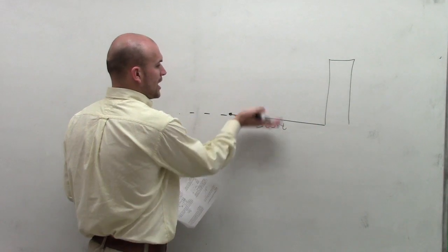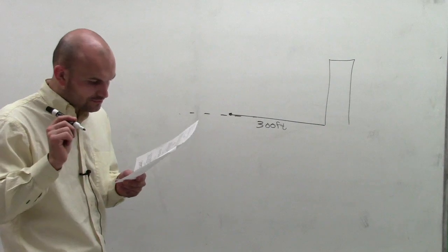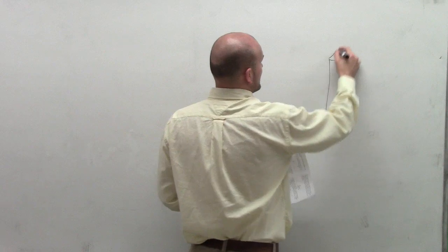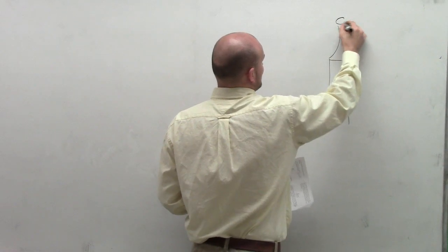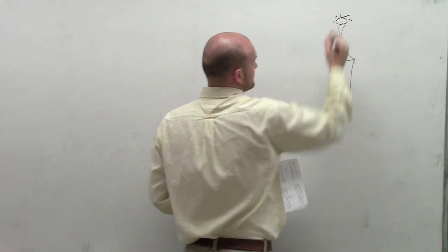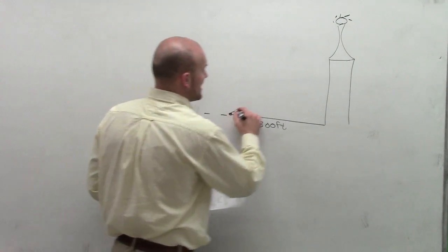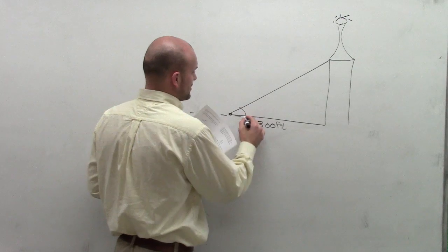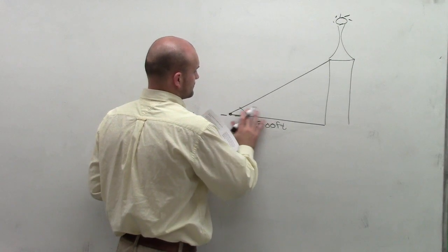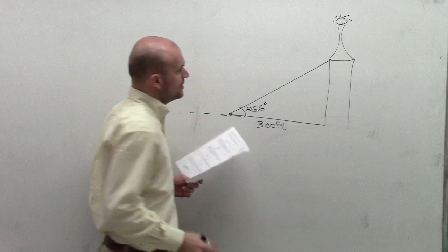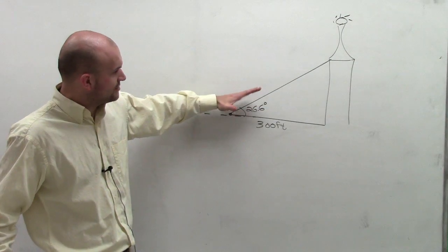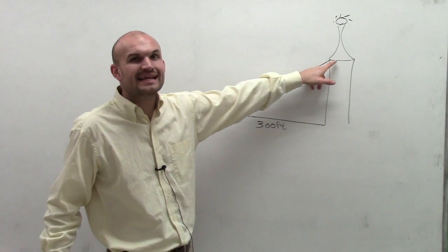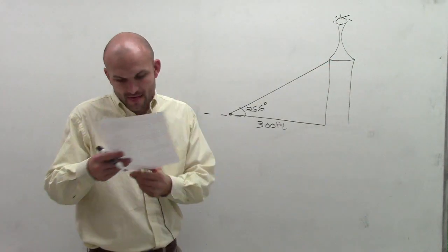Let's say here's our point. Our angle of elevation goes to the base of an antenna on top of the roof. There's this little antenna on top. So to the base of that antenna, the angle of elevation is 26.6 degrees. So the angle of elevation is 300 feet away from the building, up to the base of the antenna on the roof.